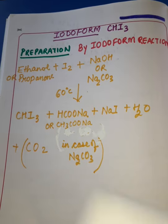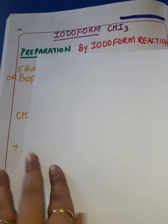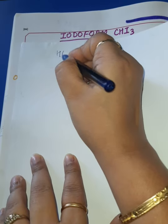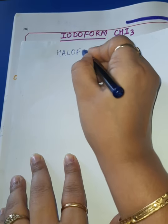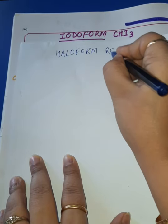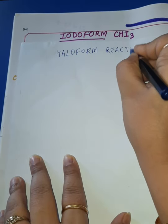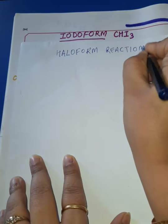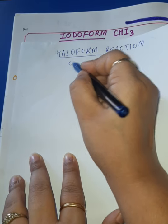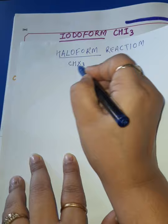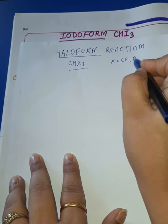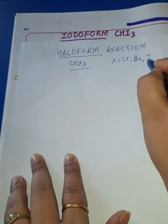Let's have a quick revision of that. The Iodoform reaction is basically a type of Haloform reaction. Haloform reaction means the reaction to prepare a Haloform. Haloform means a compound with the general formula CHX3, where X can be Cl, Br, or Iodine.